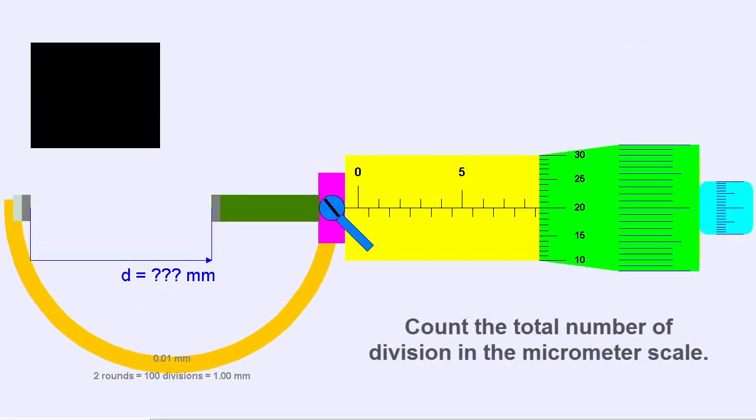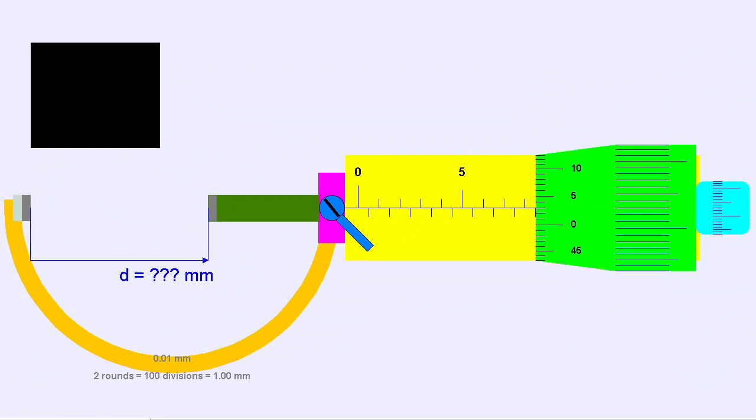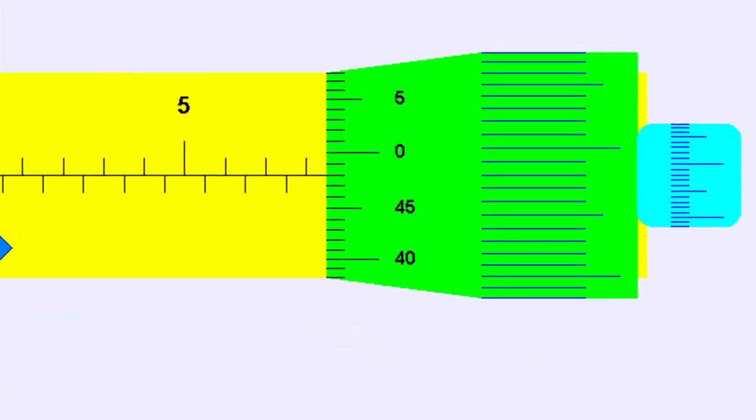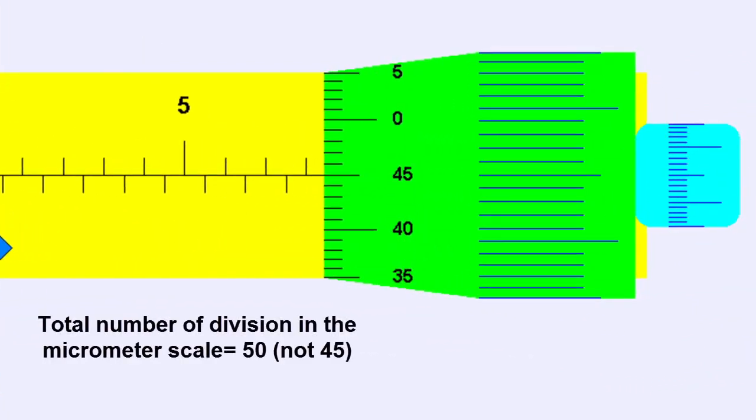Next, we count the total number of divisions in the micrometer scale. In the simulation, the total number of divisions in the micrometer scale is 50, not 45.